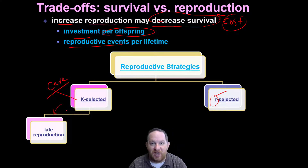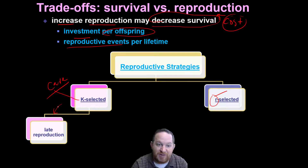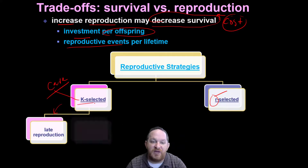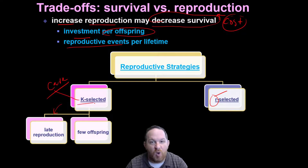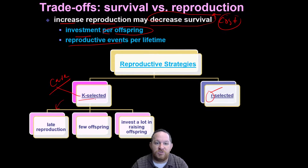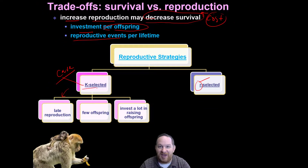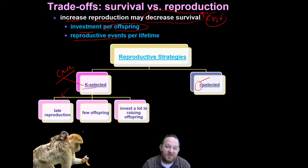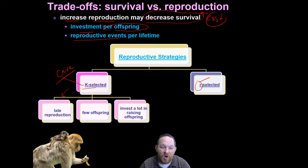K-selected species generally see a later reproduction in life — we don't have babies giving birth to babies in K-selected species. So they reproduce later in life, and it's just a few offspring. And they put a lot of effort into raising those offspring. Of course, who are you thinking about? Us. Primates. Like our friends in the monkey group, they have few offspring but put a lot of effort into raising those offspring.